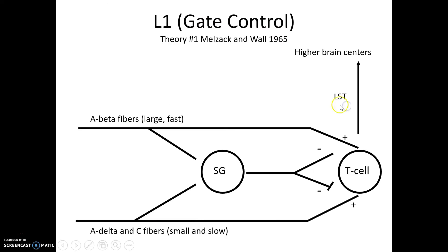If we look at the first level one gate control theory, it's going to focus on the first order neuron. This gate control theory is based off of the concept of A-beta fibers, A-delta fibers, and C fibers. These are all nerve fibers. The A-beta fibers are large, they're highly myelinated, and information travels rather quickly through them. A-delta fibers and C fibers are smaller, not as myelinated, and information travels slower.